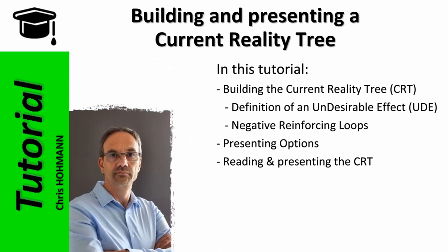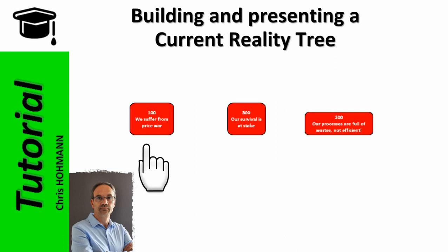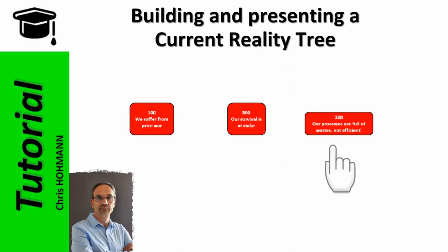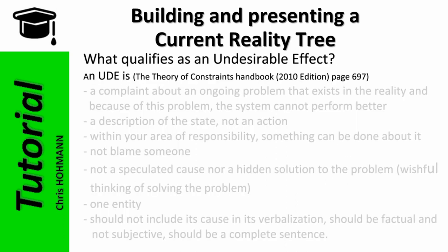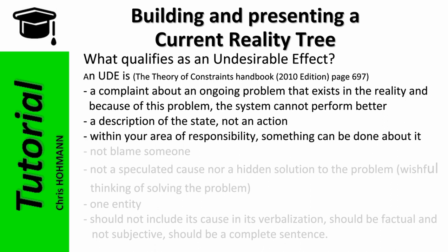For starting our current reality tree I picked up three undesirable effects, or UDs, which are serious concerns to management. The three picked UDs are: number 100 - we suffer from price war; number 300 - our survival is at stake; and number 200 - our processes are full of waste and not efficient. A side note: what qualifies as an undesirable effect? The Theory of Constraints Handbook, 2010 edition, page 697, explains that a UD is a complaint about an ongoing problem that exists in reality and because of this problem the system cannot perform better. In our case: it is a description of the state, not an action - check. It is within your area of responsibility - check.